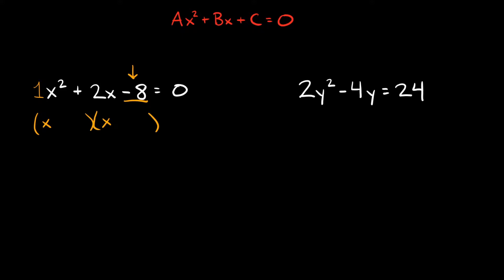What two numbers multiply to give you negative 8 but also add up to positive 2? Because this middle number tells you what the two numbers have to add up to. In this case the two numbers would be negative 2 and positive 4, because negative 2 times 4 equals negative 8, and negative 2 plus 4 equals positive 2 — which is what we're looking for.